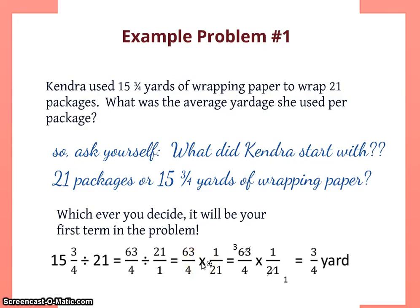Then I'm going to flip my second term, so 21 over 1 becomes 1 over 21, and change to multiplication. Then I can cross cancel. 21 is a factor of 63. 21 times 3 is 63, so I can put the 3 right here. 21 divided by 21 is 1. Then I multiply straight across: 3 times 1 is 3, 4 times 1 is 4.